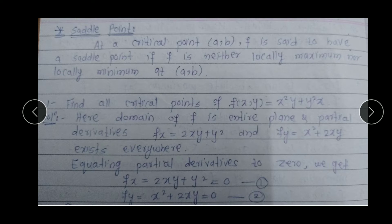At a critical point (A,B), F is said to have a saddle point if F is neither locally maximum nor locally minimum at (A,B). If at critical point (A,B), F is neither maximum nor minimum, then point (A,B) becomes a saddle point.